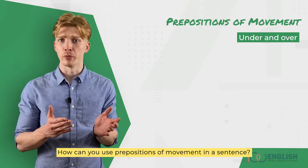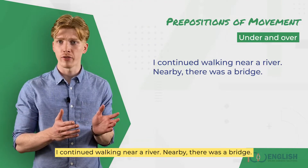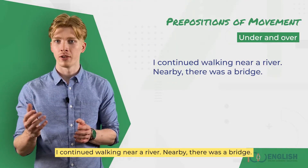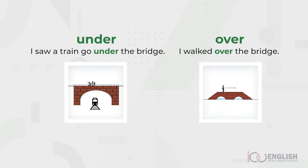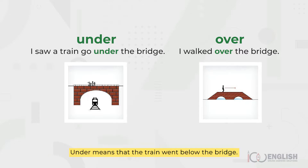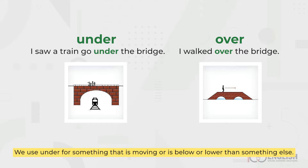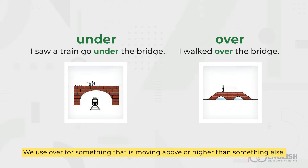How can you use prepositions of movement in a sentence? Let's come back to my trip to the town. I continued walking near a river. Nearby there was a bridge. I saw a train go under the bridge. I walked over the bridge. Let's look at the sentences and focus on the underlined words. Under and over are prepositions. Under means that the train went below the bridge. We use 'under' for something that is moving or is below or lower than something else.